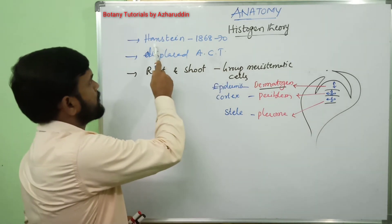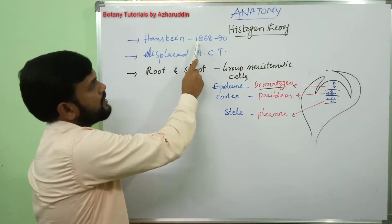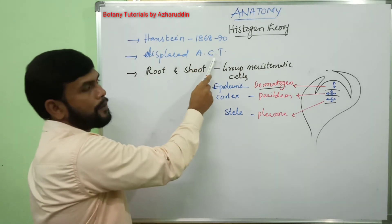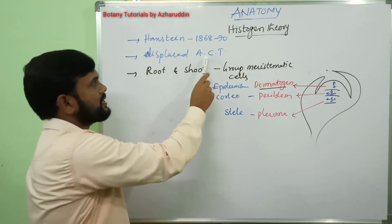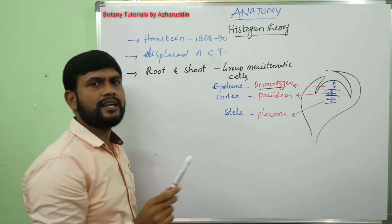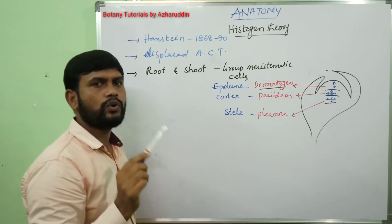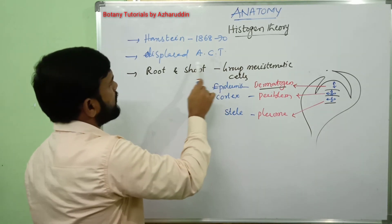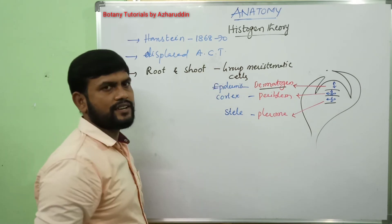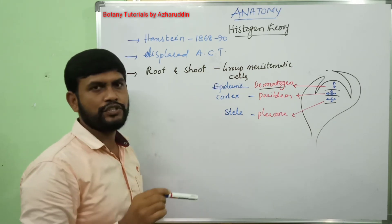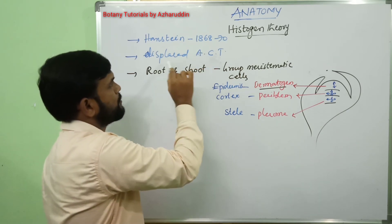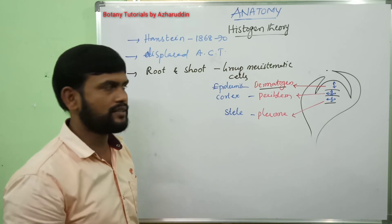Histogen theory is proposed by Hanstein in the year 1868 to 1870, and this theory displaced apical cell theory. In apical cell theory, scientists said that a single apical cell is responsible for the formation of total tissue in the plant. But later studies revealed that this single cell is not responsible for the formation of tissue in angiosperms and gymnosperms, so this theory was replaced by histogen theory and many other theories.